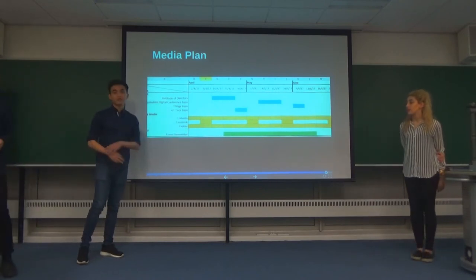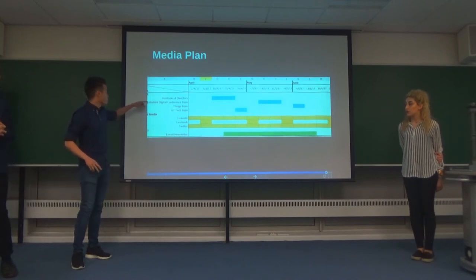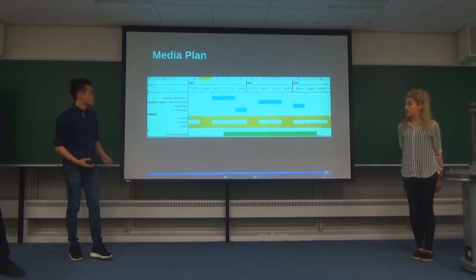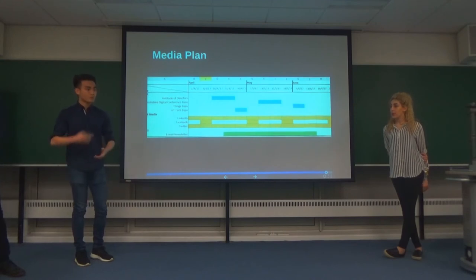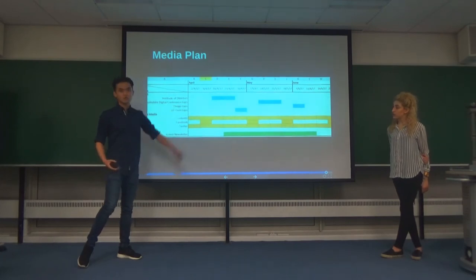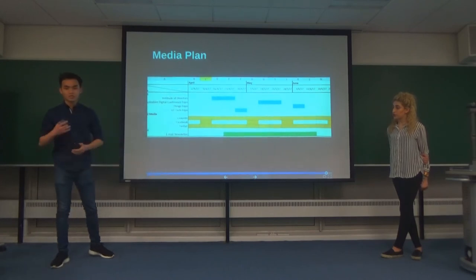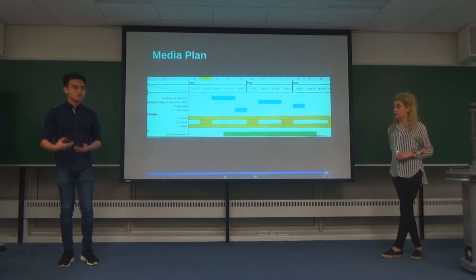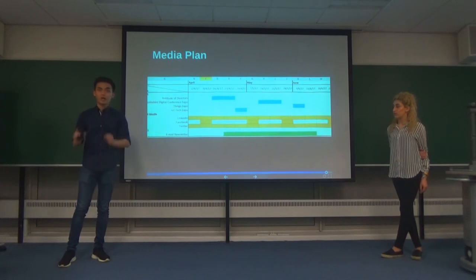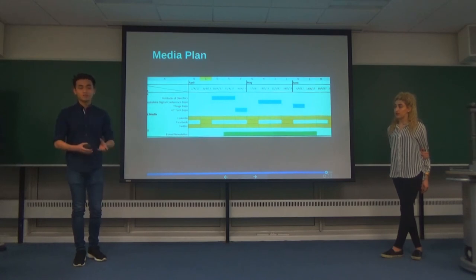For our media plan, it spans across three months as we've taken a quarterly period. The vehicles are events, social media, and emails — that's how we'll get the message across. Events covers various technology expos, conferences, and exhibitions that we will physically attend, indicated by the blue bars on the timeline. For social media, we've chosen LinkedIn as our primary platform because a study showed it was the best platform for B2B marketing, with Facebook and Twitter there to supplement it. Email newsletters will run throughout, but only starting after the first event, as they're our medium to follow up with all individuals and entities we make contact with.